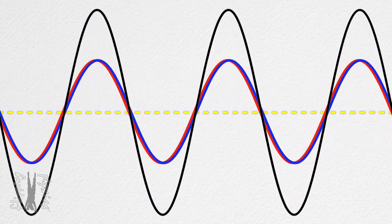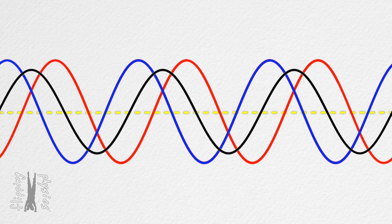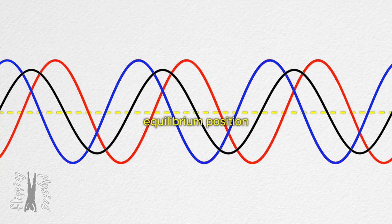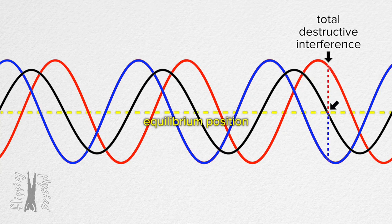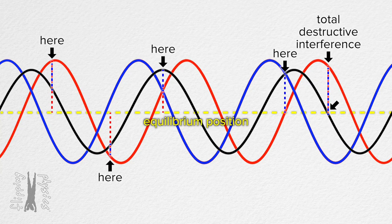What if we pause the animation somewhere between total destructive interference and all constructive interference? If you pick any point along the equilibrium position, you can add the red and blue waveforms together and see that they add up to the black standing wave pattern. Right here, the red and blue waves have the same amplitude but are on opposite sides of equilibrium and therefore totally destructively interfere — which is why the black standing wave pattern is at equilibrium right there. It is true at every point along the line that the blue and red waves add up to the black standing wave pattern.